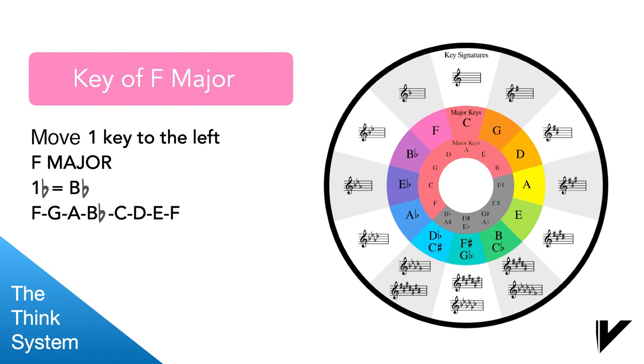This is the key of F major. Because of the name of the key, we know we're starting on the note F. We're then going to proceed up alphabetically, but we know that when we get to B, it's going to be B flat. So you should be able to say the note names of this scale: F, G, A, B flat, C, D, E, F.